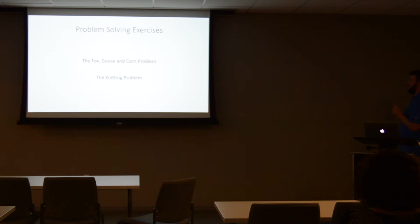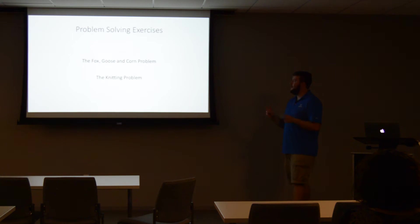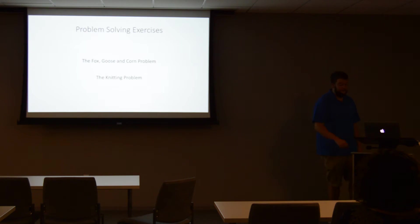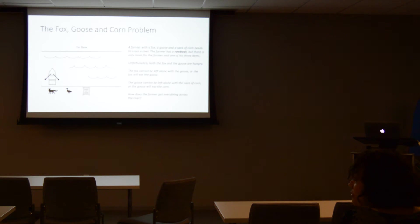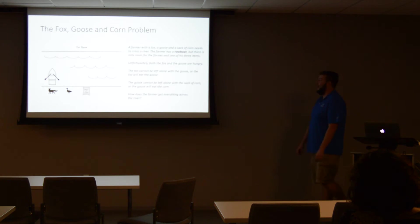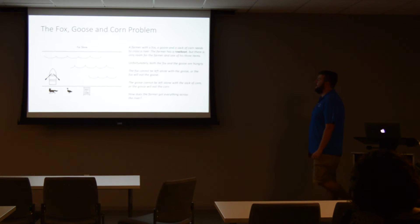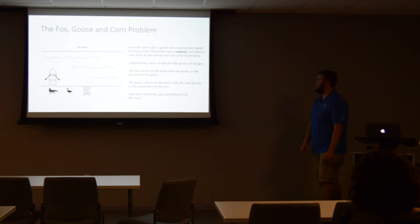I want to do some problem-solving exercises with you guys. There are two main ones — they're fun. The first one is the fox, goose, and corn problem. For the origin students in the room, you're banned from taking part in these exercises. I am also banning myself — I already know the answer. A farmer with a fox, a goose, and a sack of corn needs to cross the river from A to B. The farmer has a boat, but it can only carry the farmer and one of his three items.